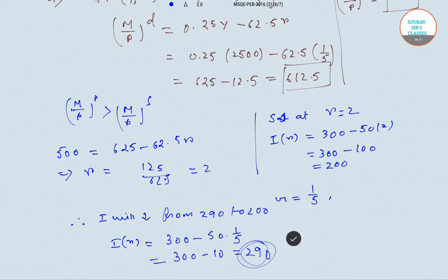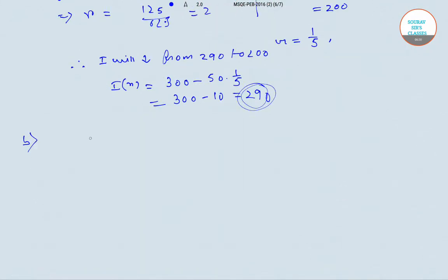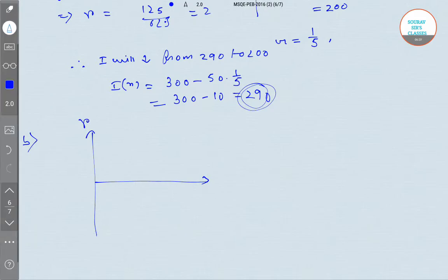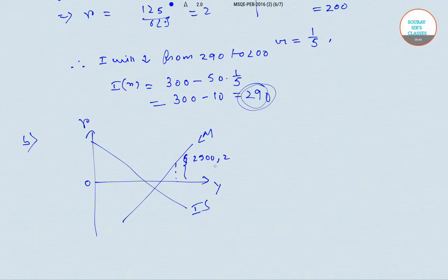For the diagram, on the vertical axis we measure small r and on the horizontal axis we measure Y. We draw the IS curve and the LM curve. The point (2500, 2) is marked on the diagram, as is the point (2500, 1/5), showing the initial position and the new money-market-clearing interest rate.